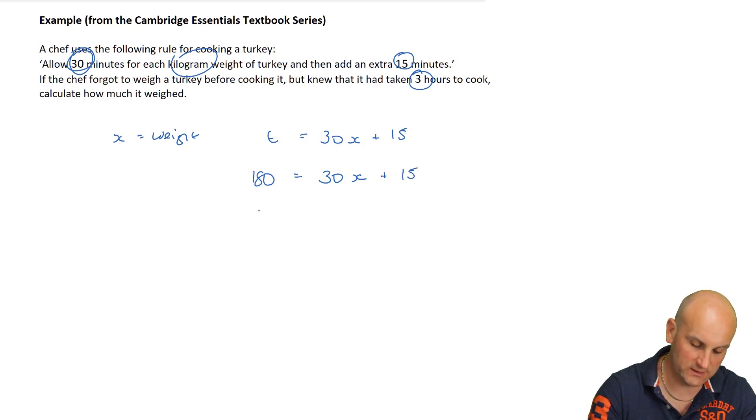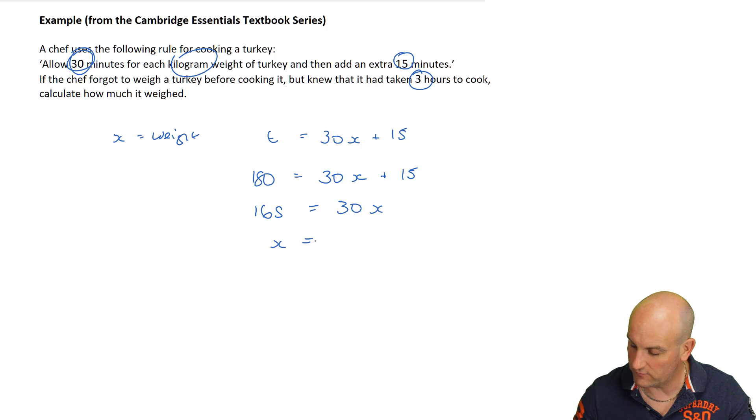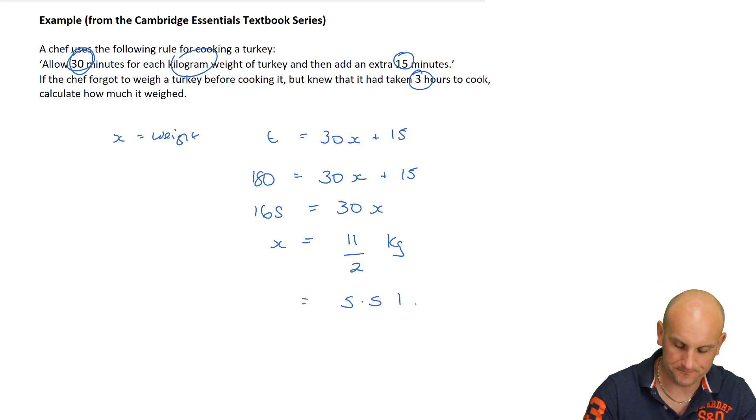I now know that 180 minutes equals 30 per kilo plus 15. Take away 15 from that, which gives me 165 equals 30X. Divide both sides by 30, which gives me 165 divided by 30. Yes, I'm using a calculator, which gives me 11 over 2 kilograms. Now, 11 over 2 kilograms is also the same as 5.5 kilograms.